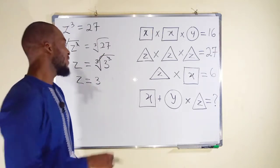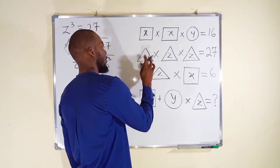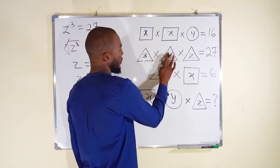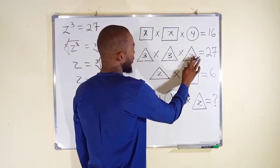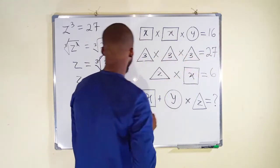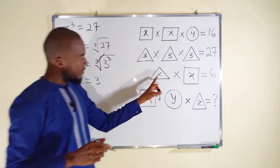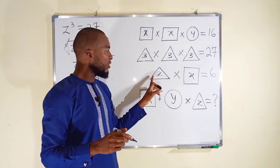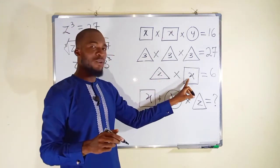So we can replace z by 3. You can see that 3 satisfied this equation, 3 times 3 times 3 is 27. Okay, z is also available in the third equation so we can use it to find the value of x.